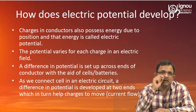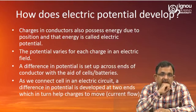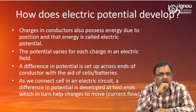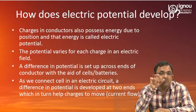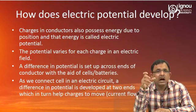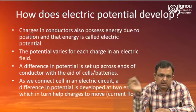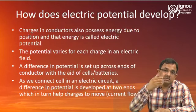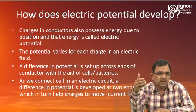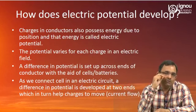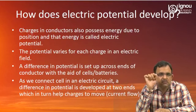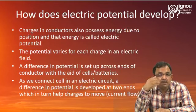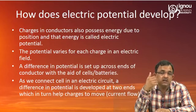The charges in conductors possess energy due to their position, and that energy is called electric potential. The potential varies for each charge in an electric field. If there is a difference in potential across the conductor, you can demonstrate this — which I will explain when I discuss Ohm's law — by increasing the number of cells or batteries at one end to create this potential difference. When we connect a cell in an electric circuit, a difference in potential is developed at the two ends, which helps move the charge, meaning it helps current flow.